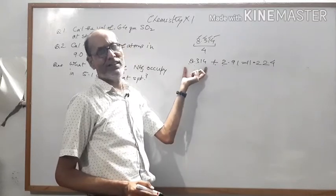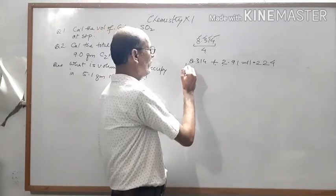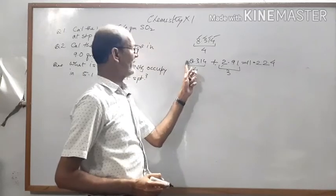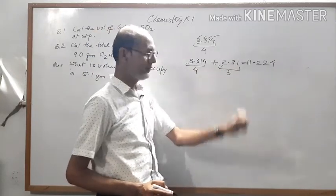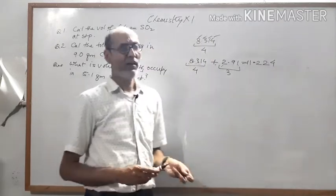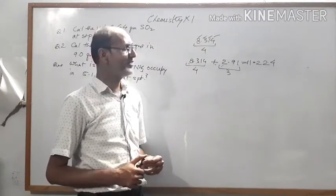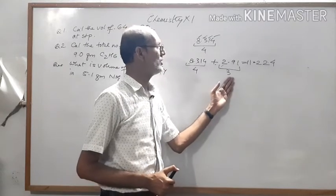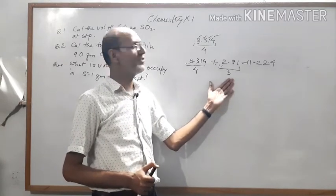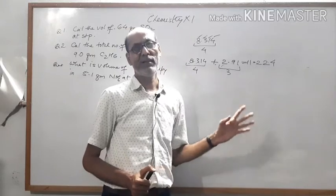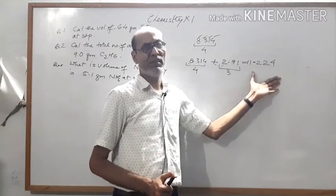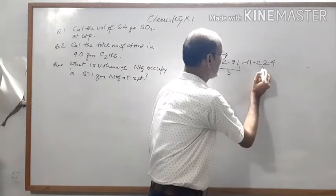In the first number, 8.314, there are 4 significant figures. In 2.91, there are 3 significant figures. The raw answer contains 5 significant figures. To determine the correct number of significant figures in the answer, you must look at the least precise number in the question — the one with fewer significant figures. That is 3 significant figures, so the answer should also have 3 significant figures.